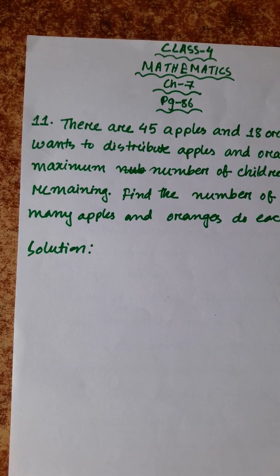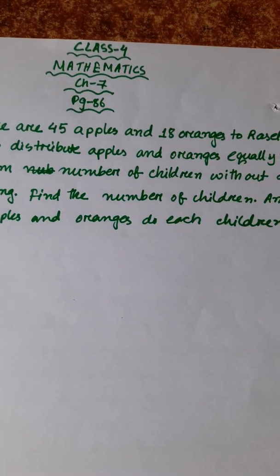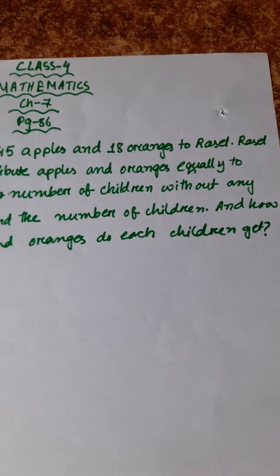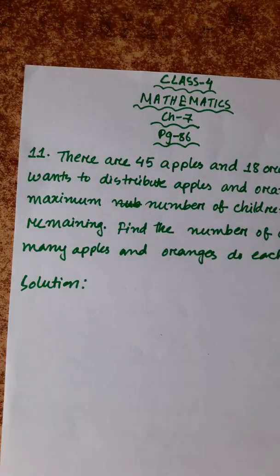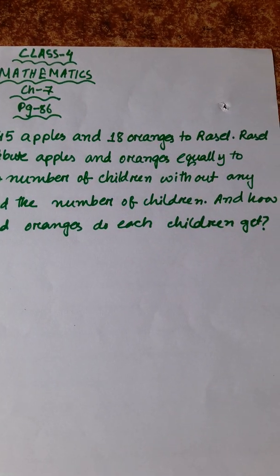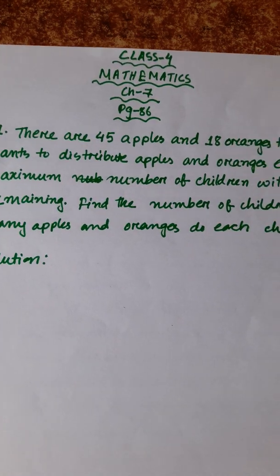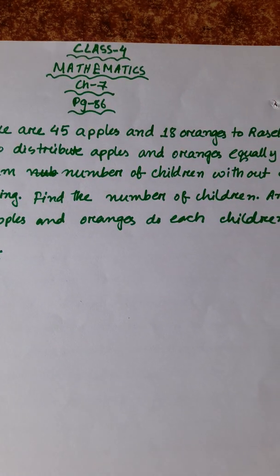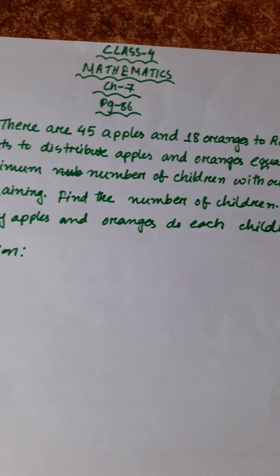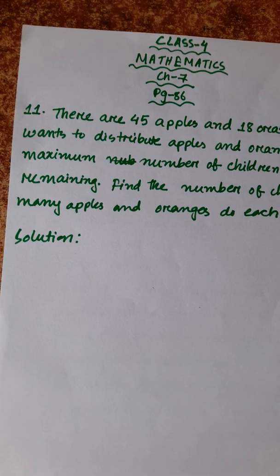Number 11: There are 45 apples and 18 oranges. Rasthel wants to distribute apples and oranges equally to the maximum number of children without any remaining. Find the number of children and how many apples and oranges each child gets.